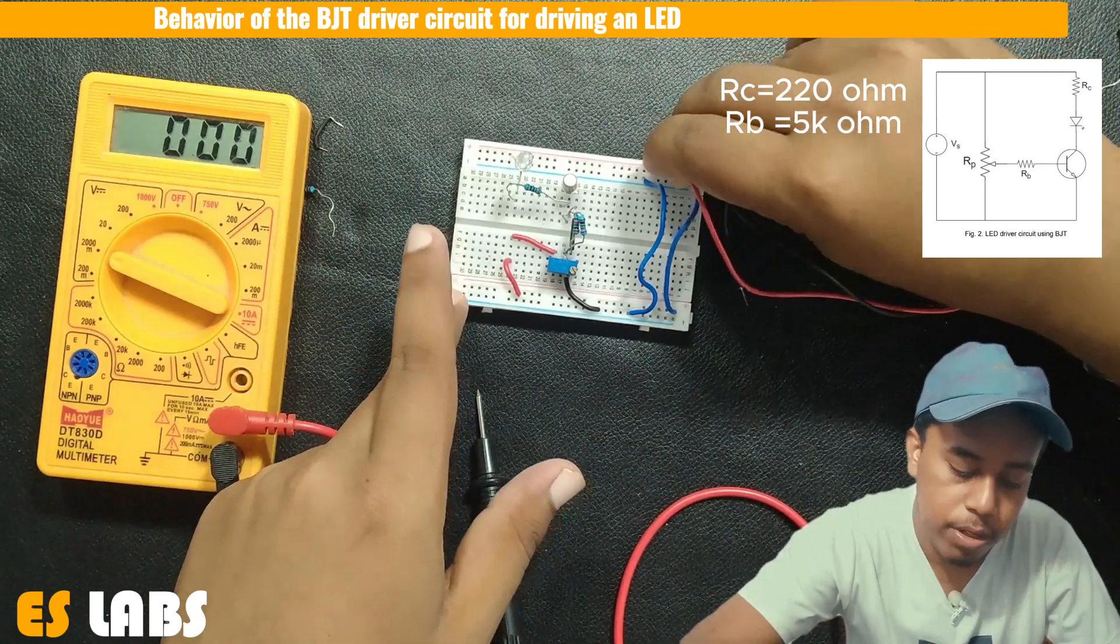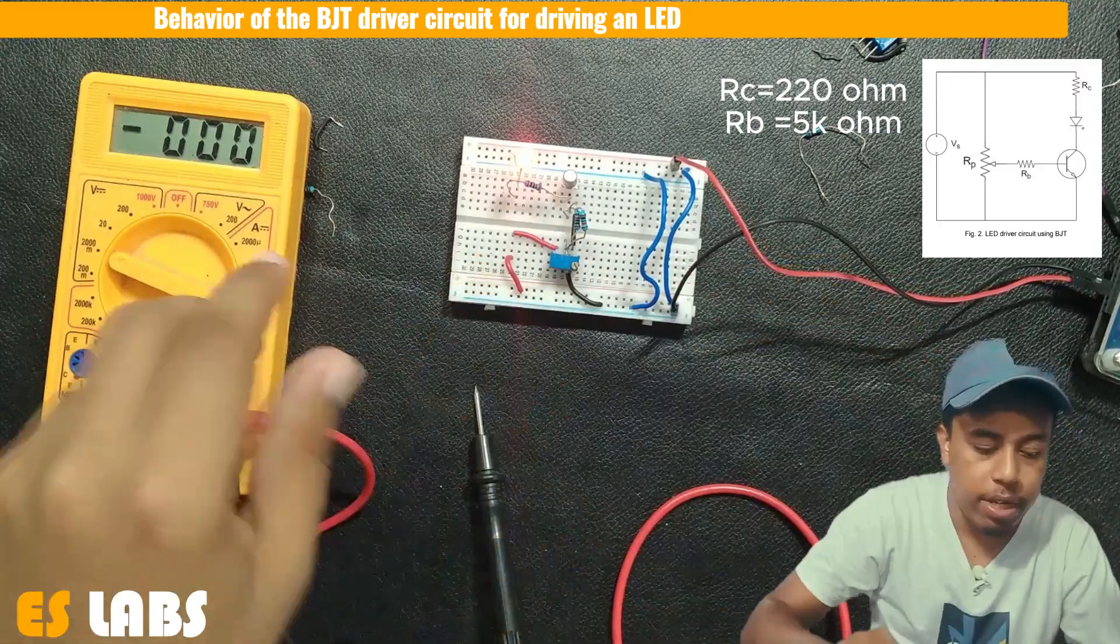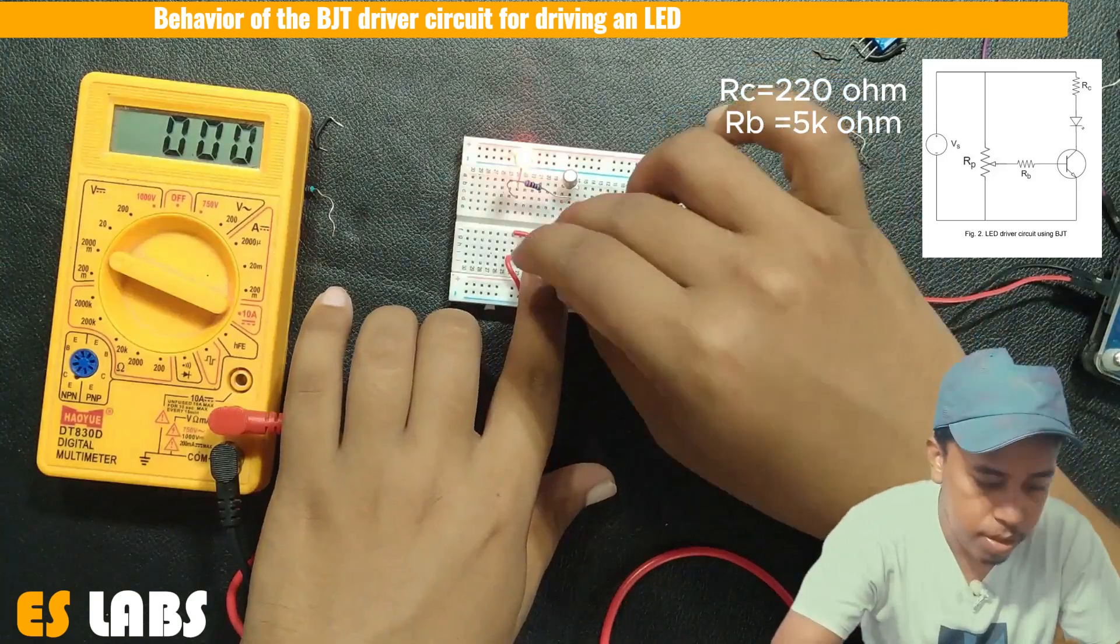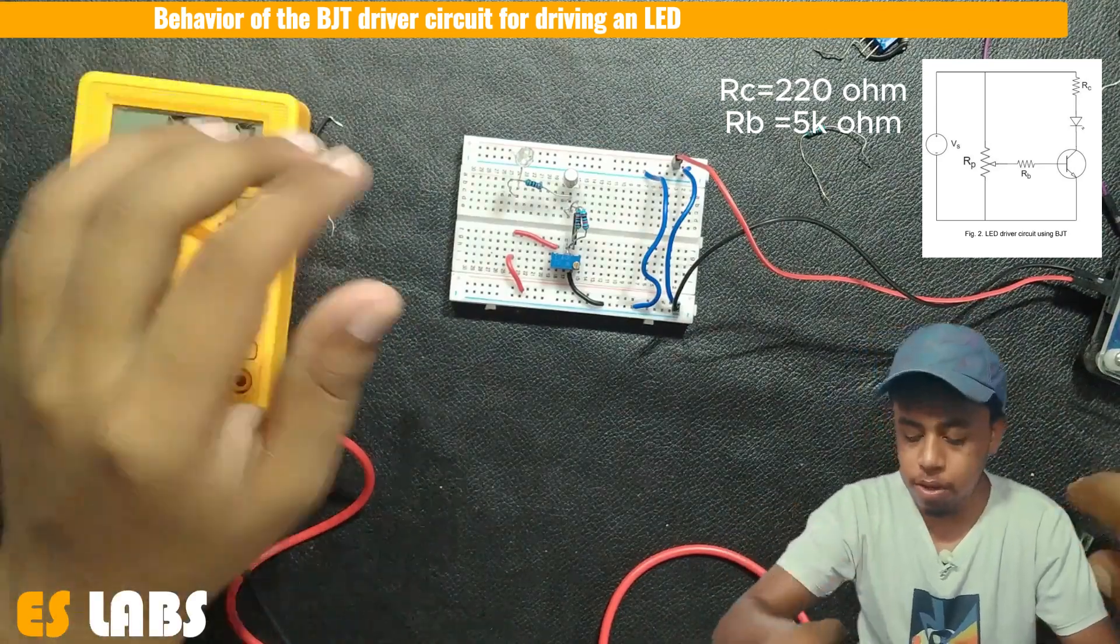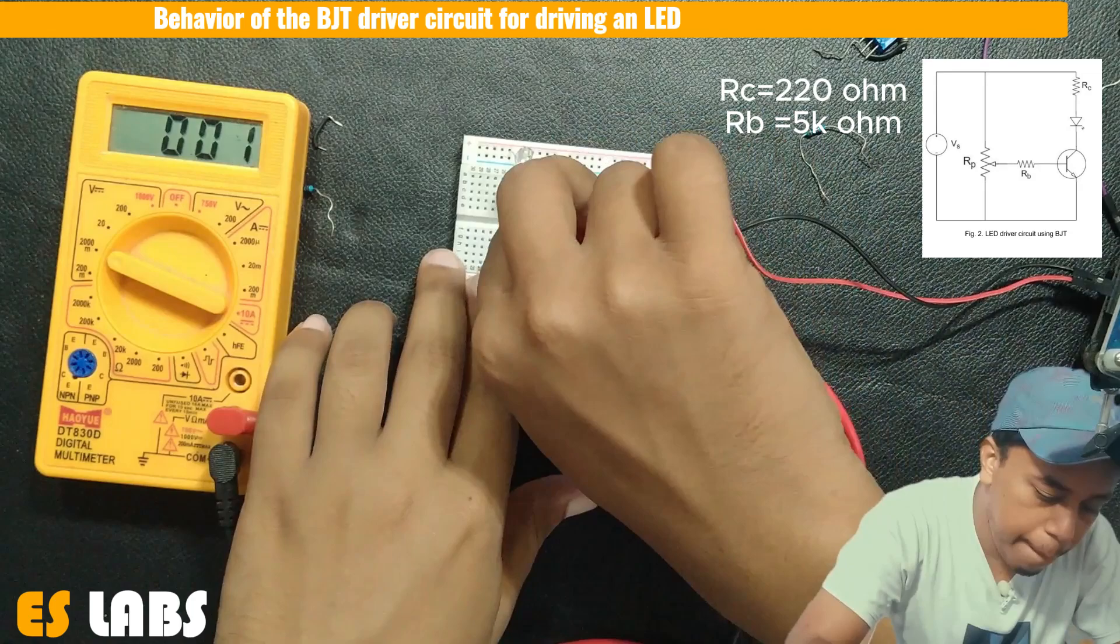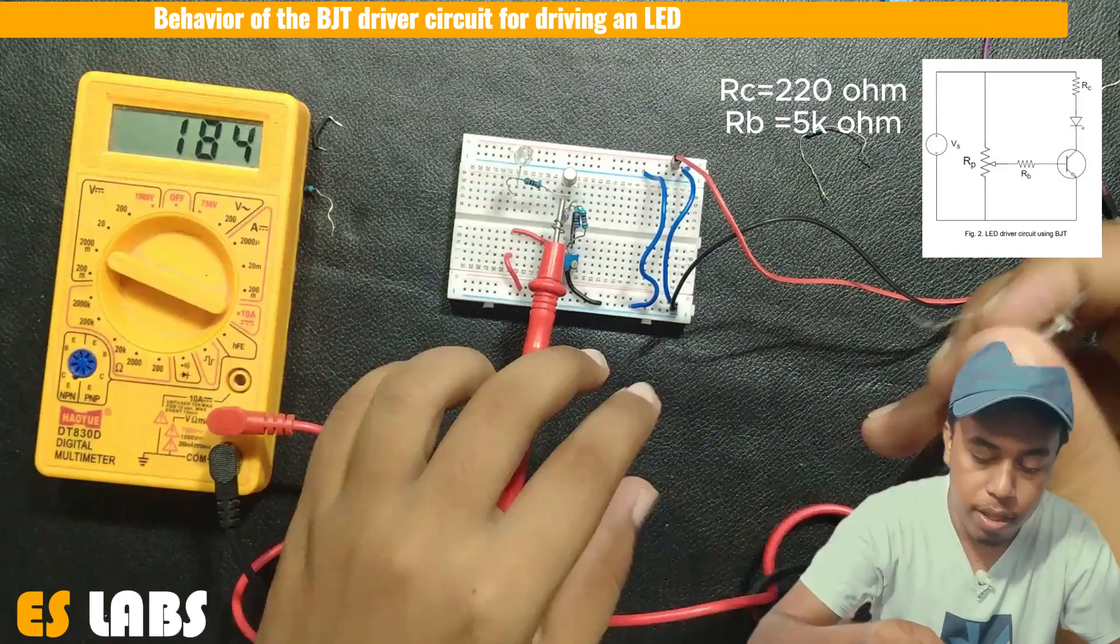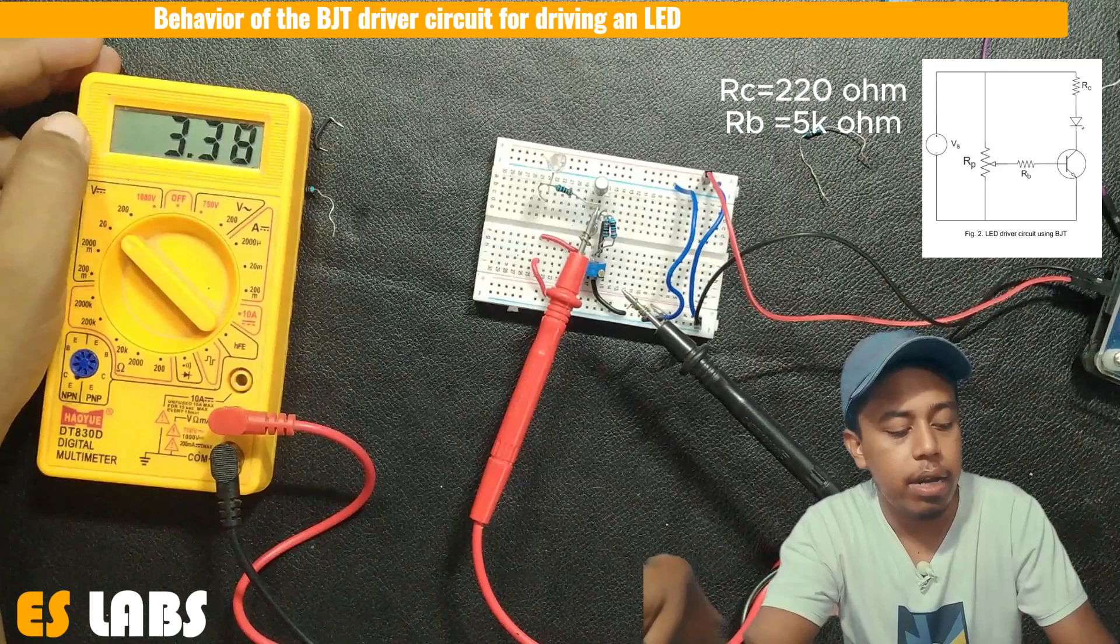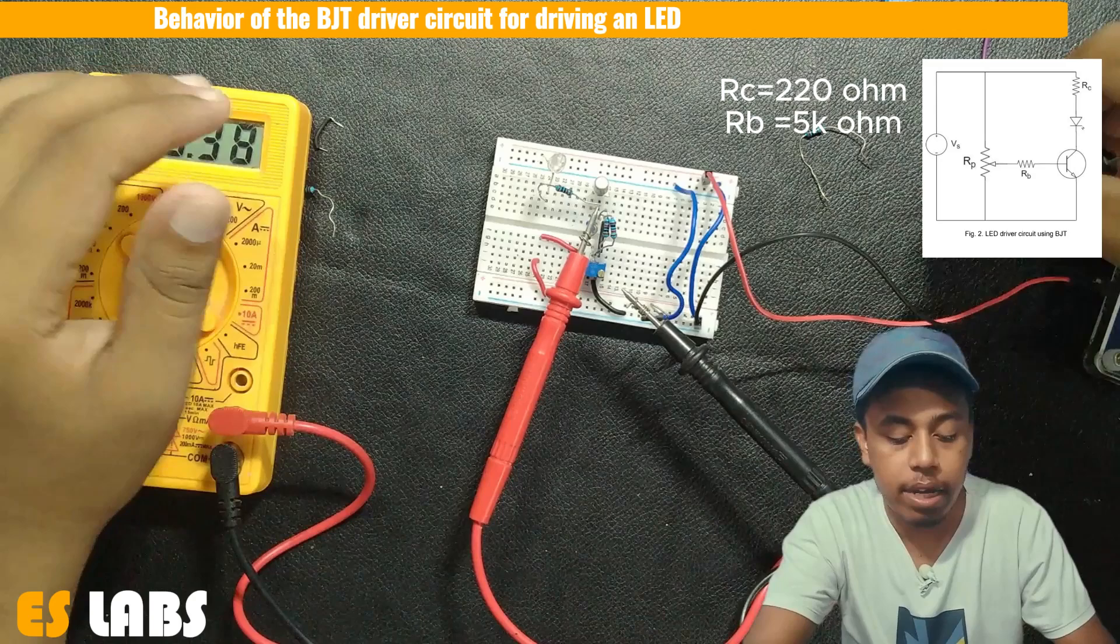So I am giving 5 volt and the ground. So we can see that this LED is glowing. So this LED now becomes off. And we are going to measure the voltage between base and the emitter. So the voltage across the base and the emitter is equal to 3.38 volt when this LED is off.